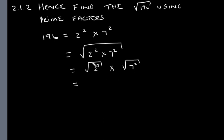What happens when we take the square root of a square? The square and the square root cancel each other out. And the square root also cancel each other out. That will give us 14. So the square root of 196 is 14.